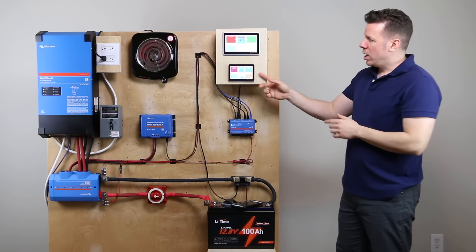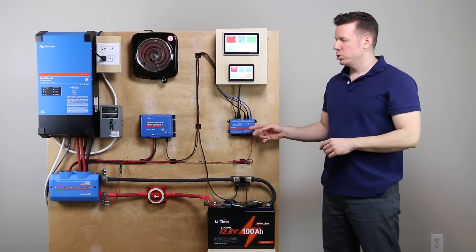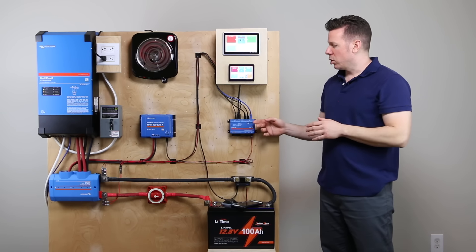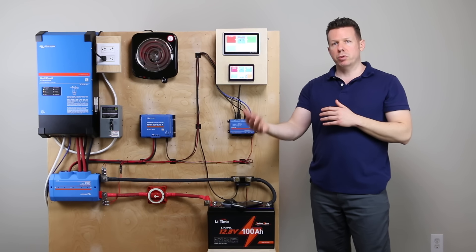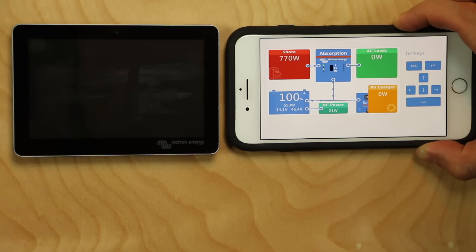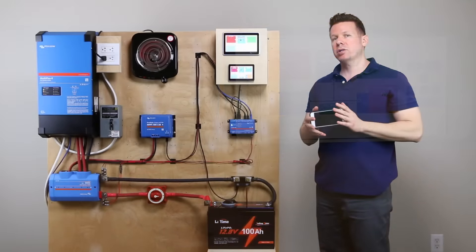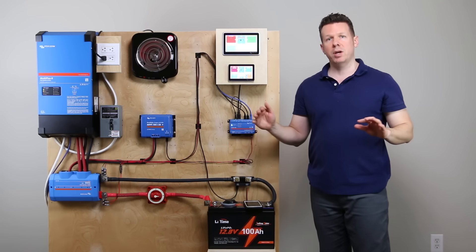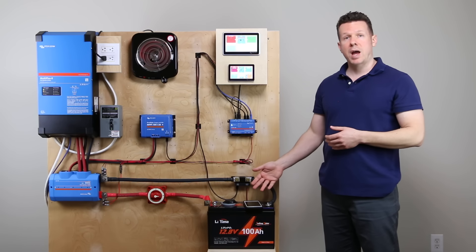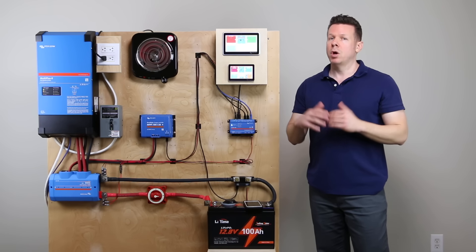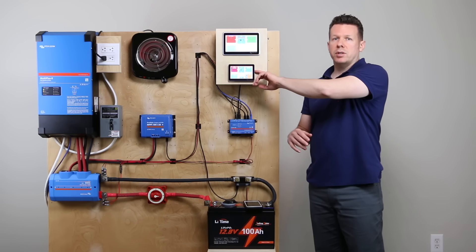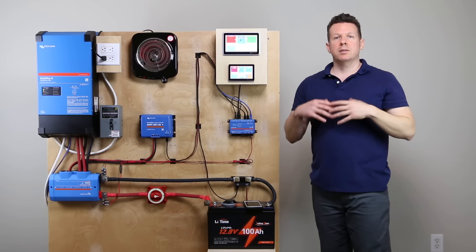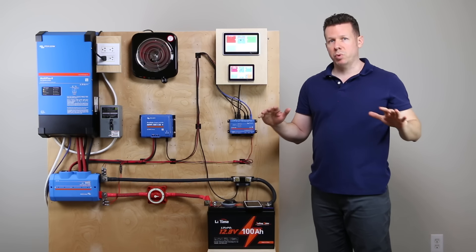You'll see that data start to populate there on the GX Touch 50. So I should mention the GX Touch 50 is actually a separate product from the Serbo GX, and that brings us to our first difference between these two. With the Serbo GX, it has a Bluetooth signal and is able to output to your phone or tablet with the Victron Connect app. So you don't actually need a screen with the Serbo. The brain and the screen are separate, so you can opt to just use your phone or tablet as your screen and not purchase one.